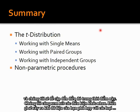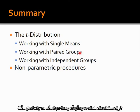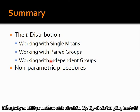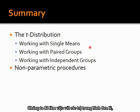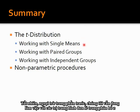We look at different conditions — what happens when your data fits different types of conditions. For example, what happens if you're trying to compare single means, what happens if you're trying to compare paired groups, what happens when you want to compare independent groups. In the previous lecture we already worked with single means, but we were still working with the Z distribution.